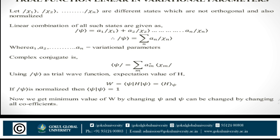The next question is: trial function linear in variational parameters. We take different states |ψ₁⟩, |ψ₂⟩, ..., |ψₙ⟩ which are not orthogonal and not normalized. The linear combination of all such states is given as |ψ⟩ = a₁|ψ₁⟩ + a₂|ψ₂⟩ + ... + aₙ|ψₙ⟩, or |ψ⟩ = Σₙ aₙ|ψₙ⟩. Here a₁, a₂, ..., aₙ are the variational parameters.